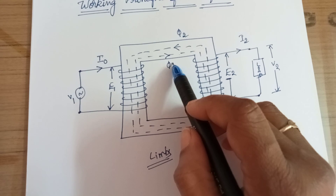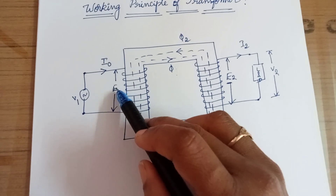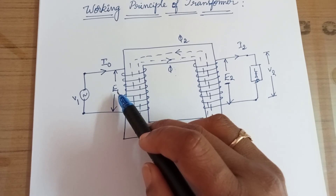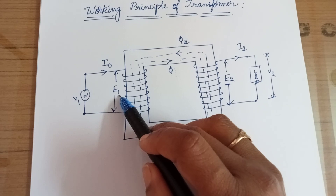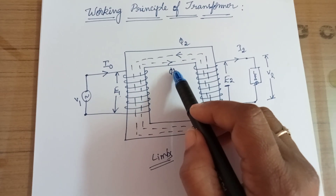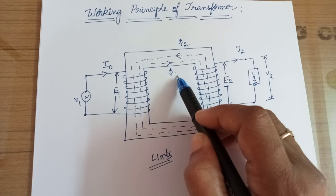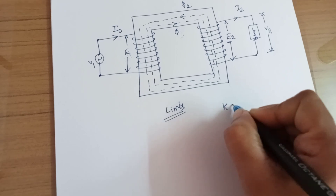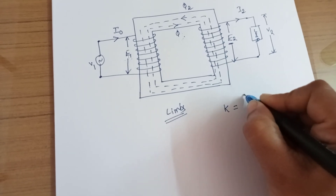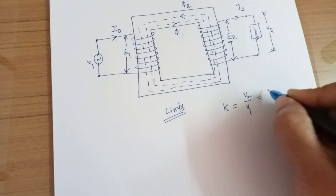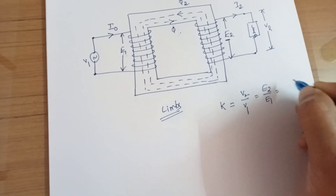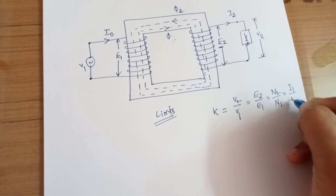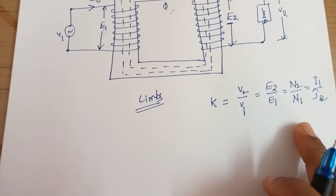With the reduction of flux, the EMF will also be reduced, because EMF is the rate of change of flux. So if the flux is reduced, the EMF will automatically be reduced. Now we know the transformation ratio: V2/V1 = E2/E1 = N2/N1 = I1/I2.